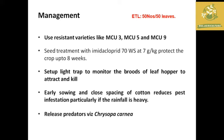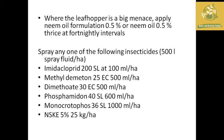We have to look at the management practices and the economic threshold. For chemical insecticides, Imidacloprid, Methyl Demeton, Dimethoate, Phosphomidon, Monocrotophos are used. Also, neem seed kernel extract at 5%, 25 kg per hectare is recommended.